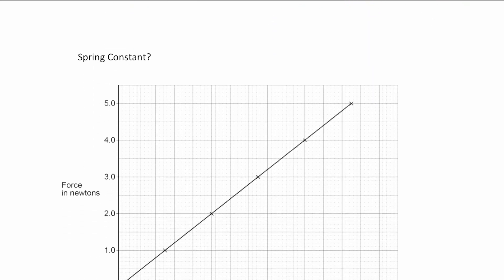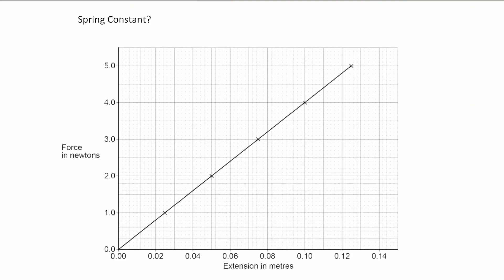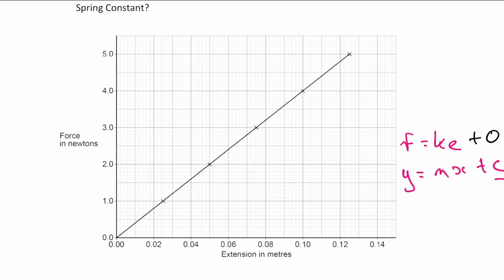The next question asks us to work out the spring constant from a graph of force against extension. The key equation is F equals ke, where k is the spring constant. This has the same form as y equals mx, meaning the gradient of the force-extension graph gives us k directly. The line passes through the origin, which we can confirm from the graph.